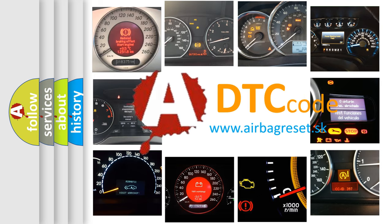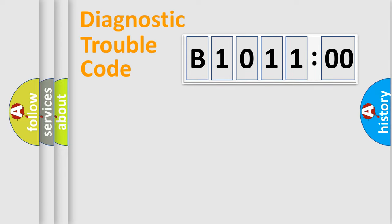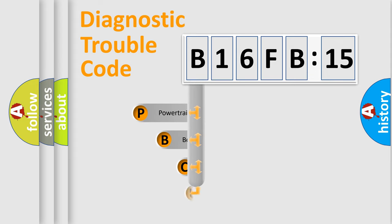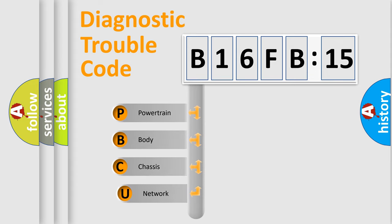We divide the electric system of automobile into four basic units: Powertrain, Body, Chassis, and Network. This distribution is defined in the first character code.